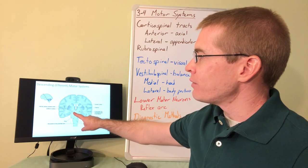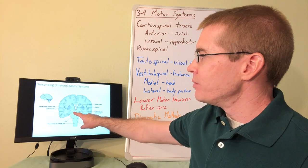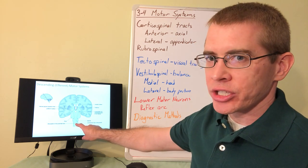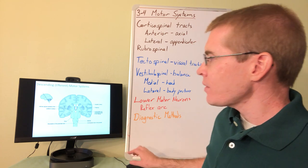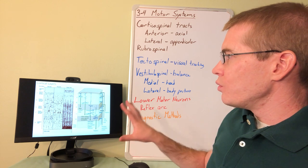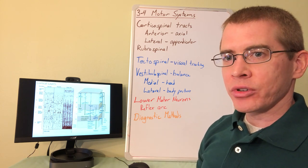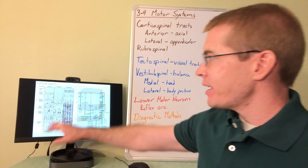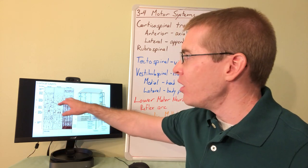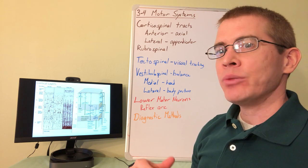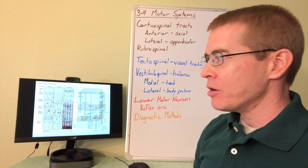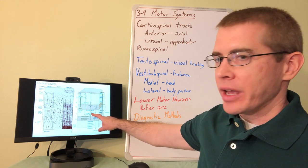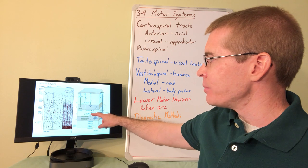These upper motor neurons travel through the internal capsule, through the midbrain, pons, and into the medulla, where they cross at the decussation of the pyramids. Within the cortex, which has five distinct layers with specific names, upper motor neurons reside in the fifth layer and are called pyramidal cells or pyramidal neurons. These pyramidal neurons project below the brain, down to brainstem nuclei or into the spinal cord itself.